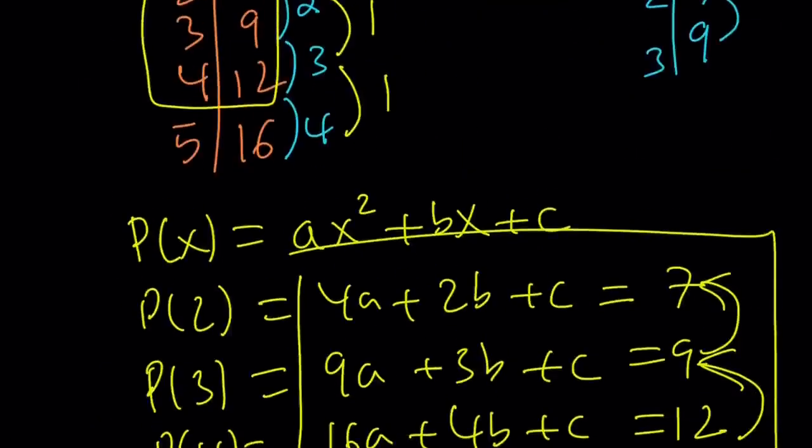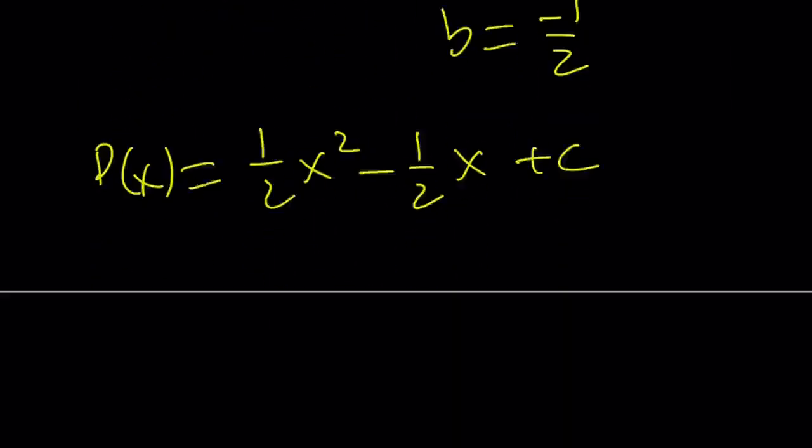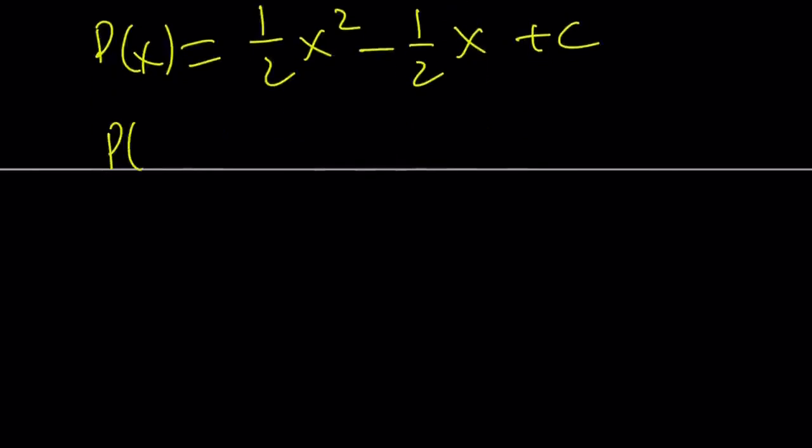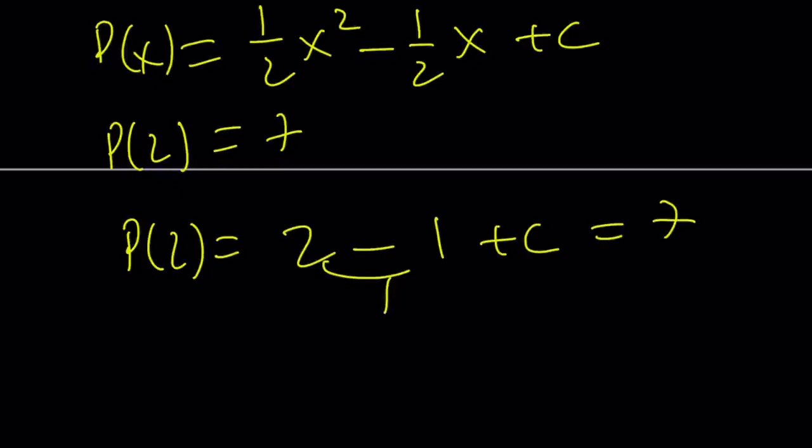We also know that, well, we've got several data points, but let's go ahead and use the given one. P of 2 is 7, right? So let's go ahead and replace x with 2, and that's going to give us 2 squared, 4 half of 4 is 2, minus 1 plus c is equal to 7. This means c is equal to 6.